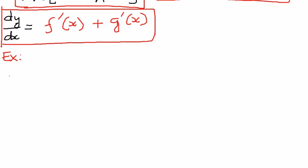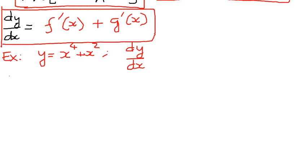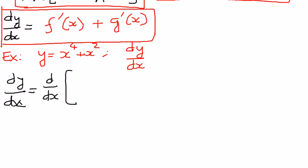Example. Let's say we have y is equal to x to the power of 4 plus x to the power of 2, and we want to find the first derivative of this function with respect to x. The way we solve this is as follows: dy by dx is going to be equal to d by dx of x to the power of 4 plus x to the power of 2.